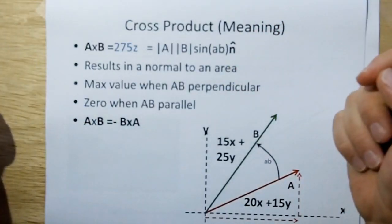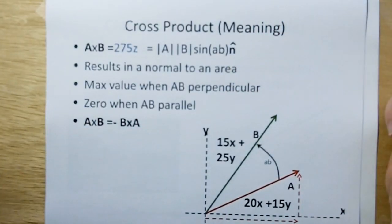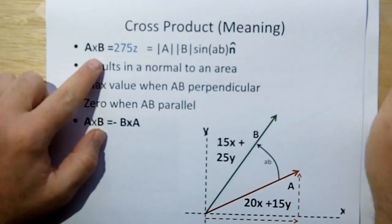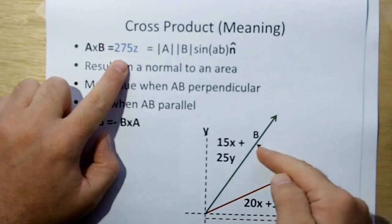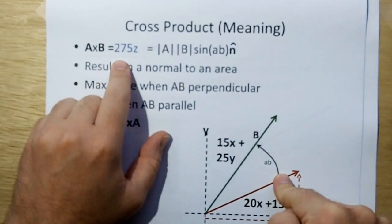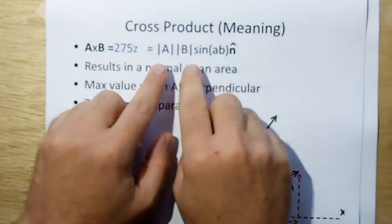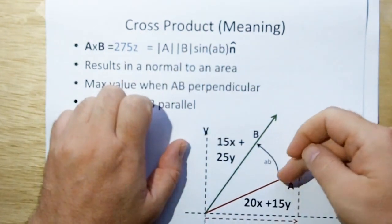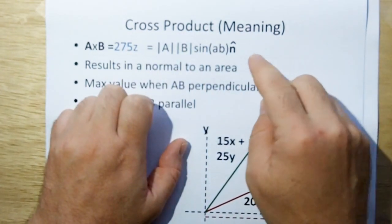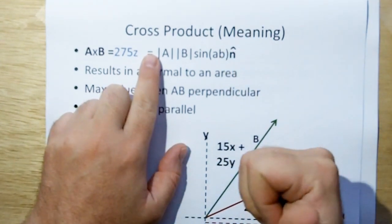The meaning to the cross product is the cross product gives you a normal to two vectors. Again, you take A cross B and you get your normal Z, which would be 275 in this case. And the way you show that in another meaning is if you take the magnitude of A and the magnitude of B, take the sine between the two angles, that would be the magnitude of the normal that you get.